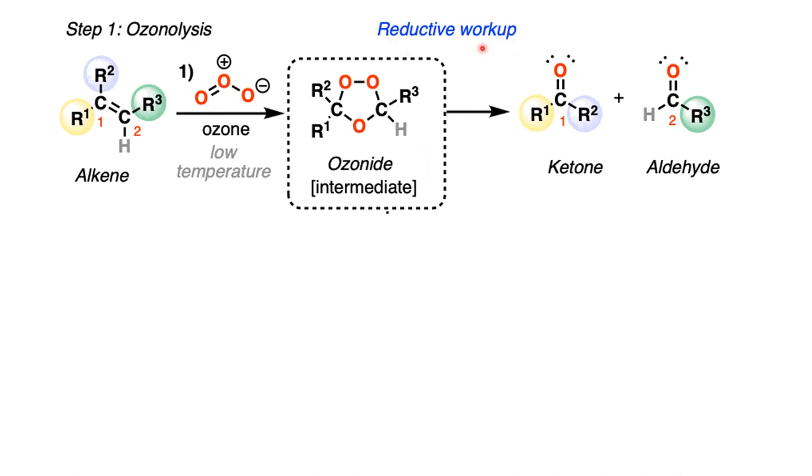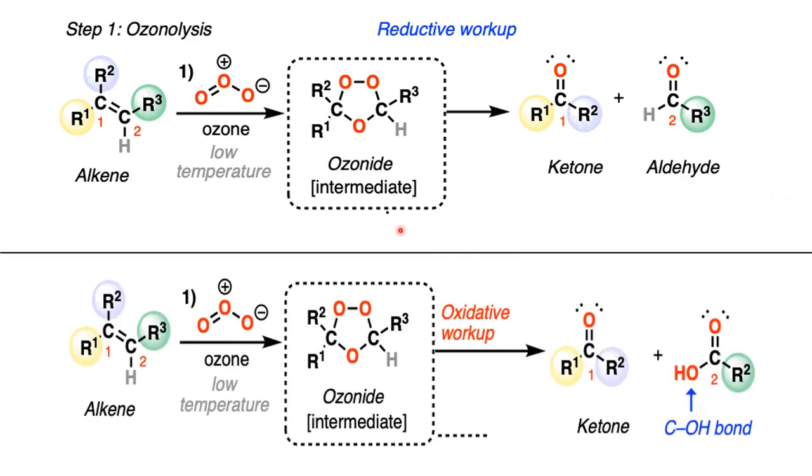Here what we see is a reductive workup. In case of a reductive workup, the alkene is converted into a ketone and an aldehyde. And in case of the oxidative workup, which we will see in the next few slides, the alkene is converted into a ketone and a carboxylic acid.